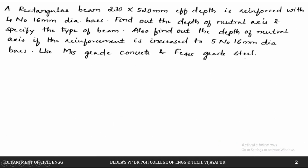Let us take this example. We have a rectangular beam of size 230 mm by 520 mm effective depth — 230 mm is the breadth of the beam, depth is 520 mm effective depth as given — reinforced with 4 bars of 16 mm diameter.